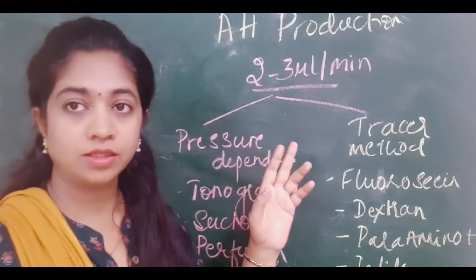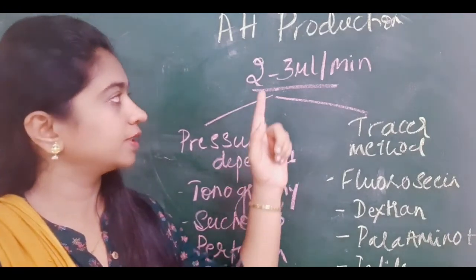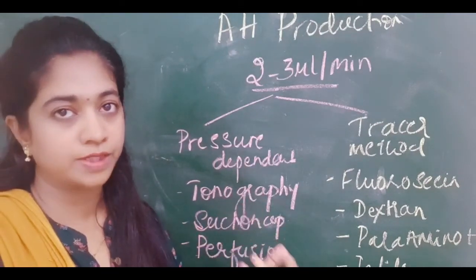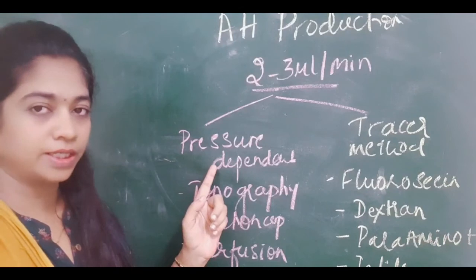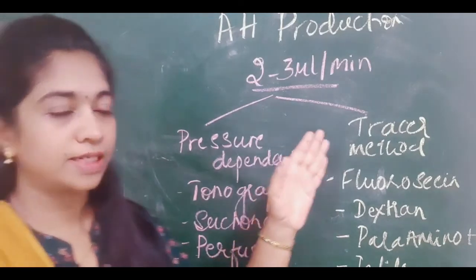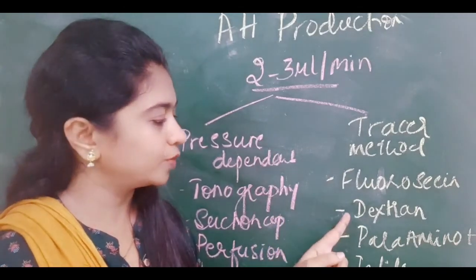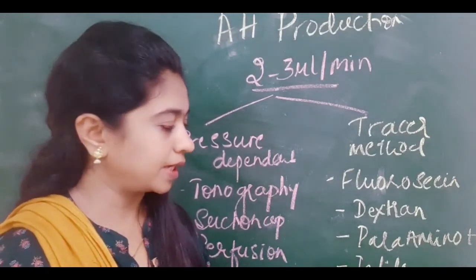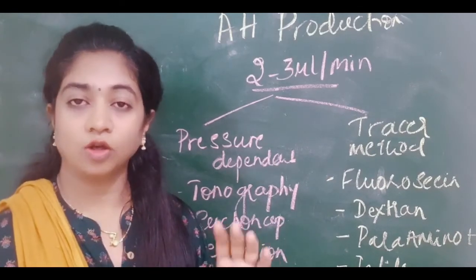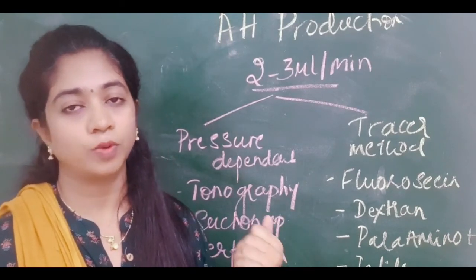Normally aqueous humor is produced at the rate of 2 to 3 microlitres per minute. Methods to measure production include tonography, suction cups, or perfusion using tracer elements such as fluorescein, fluorescein-labeled dextran, para-aminohippurate, and iodides. The normal volume of aqueous humor in the anterior chamber is around 2.5 mL, and in the posterior chamber it is around 0.6 mL.